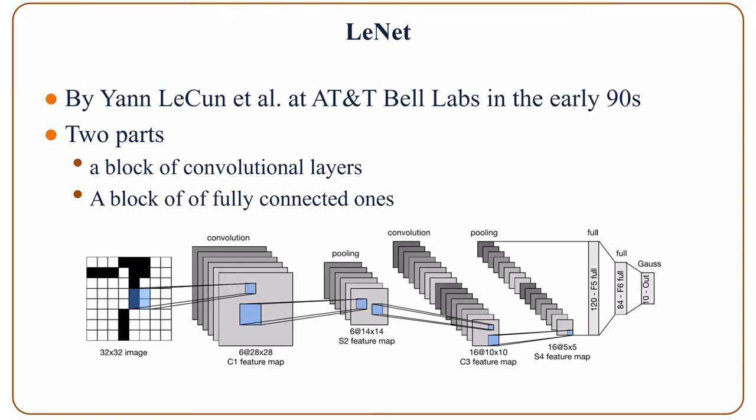We now talked about the very first and early convolutional neural network. This convolutional neural network was used to recognize handwritten digits in images. It was invented by Yann LeCun and others at AT&T Bell Labs back in the early 90s. LeNet, as its name, has two parts: the first part is a block of convolutional layers, and the second part is a block of fully connected ones.